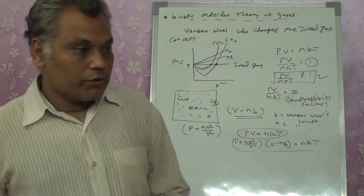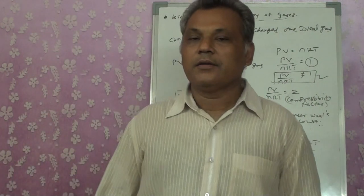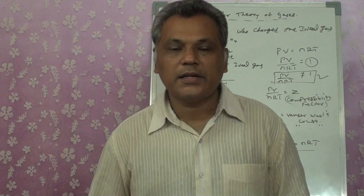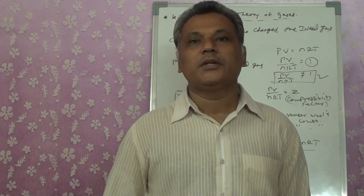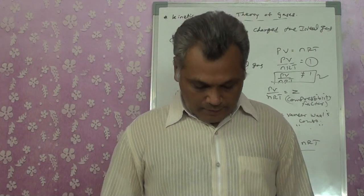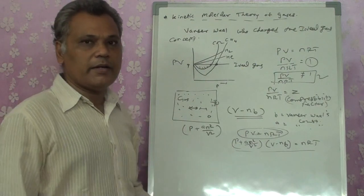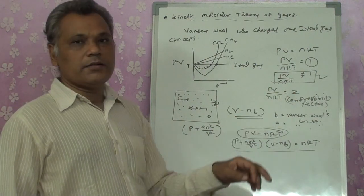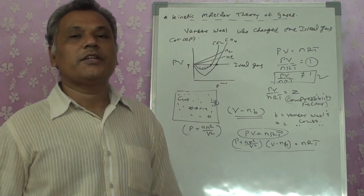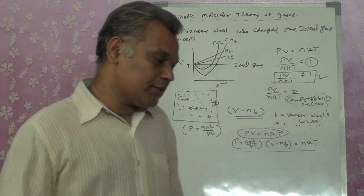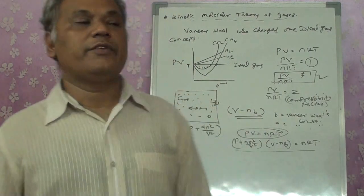Due to these corrections, we distinguish between real gas and ideal gas conditions. Every gas behaves as an ideal gas only under specific conditions; at normal temperature and pressure they are real gases. If Z equals 1, it is ideal; if pressure is high, Z is greater than 1; if pressure is low, Z is less than 1. This theory of ideal and real gases was given by van der Waals.